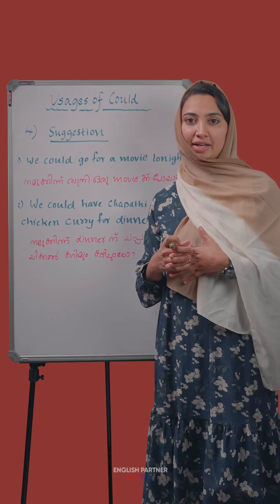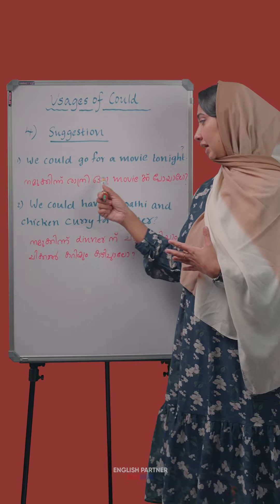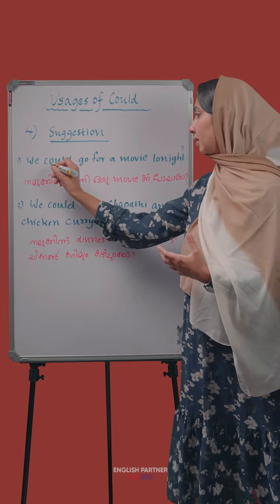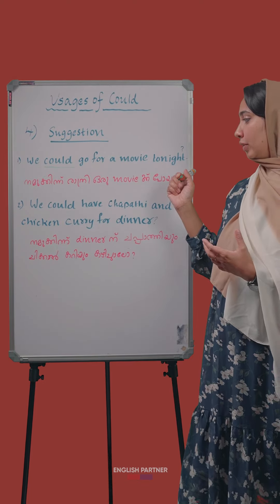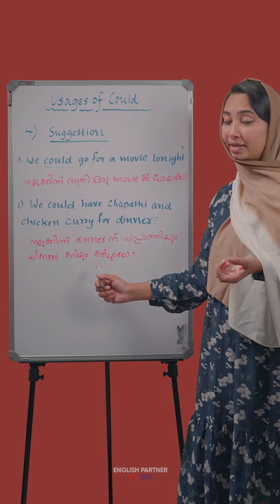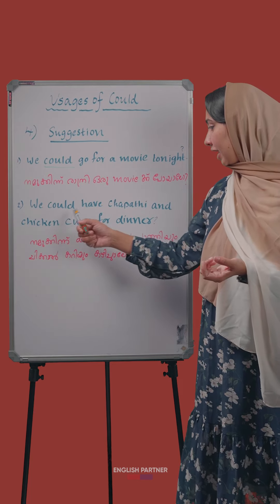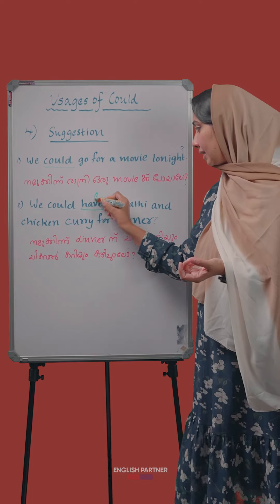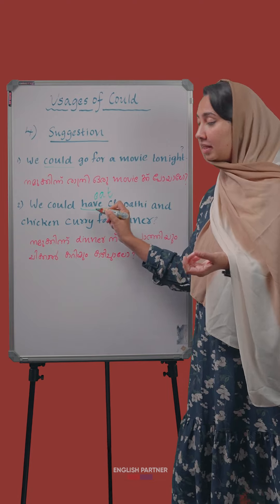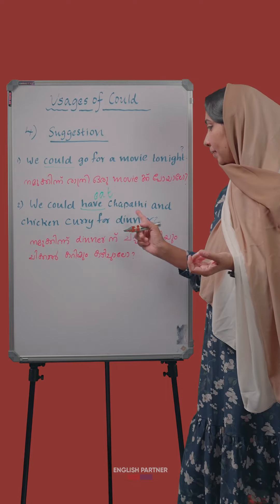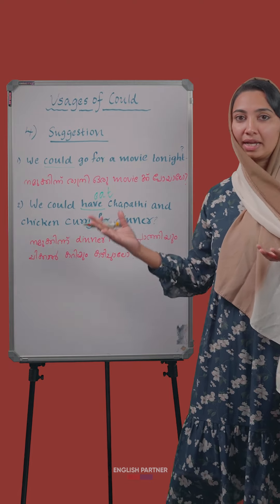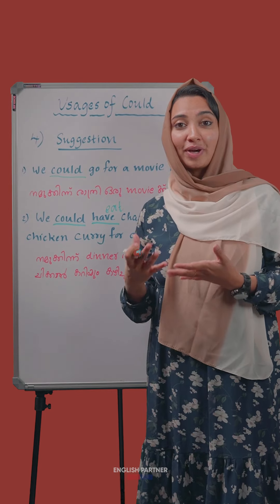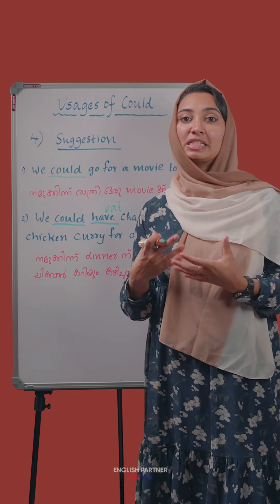We can also use 'could we' for suggestions or group permission. For example: 'Could we go to a movie tonight?' or 'Could we have a movie tonight?' These are polite ways to make suggestions.